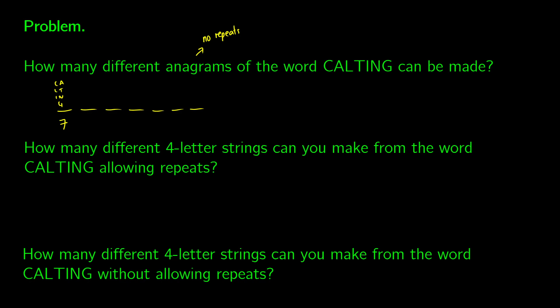Now whichever one we pick is not going to be available for the second option. So we're only going to have six choices for a second option. So like, let's say we pick A here, then we're only going to have C, L, T, I, N, G available for the second one.